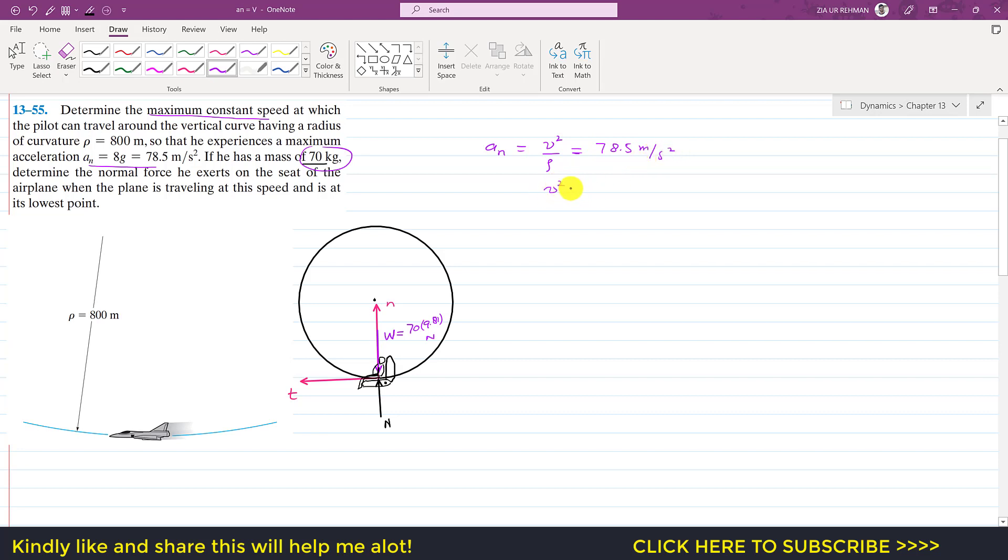v velocity we need to multiply this on both sides, so this is 78.5 into ρ and ρ is given, it is 800 meters.